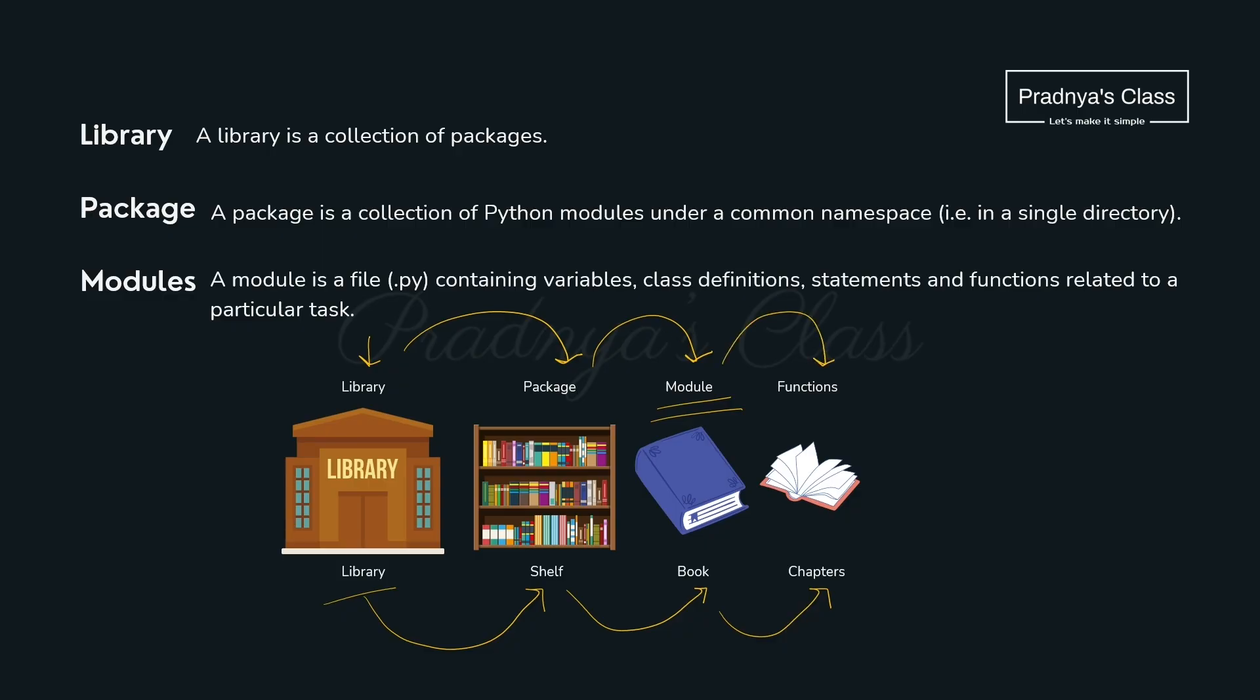Then if we talk about the definition, library is nothing but a collection of packages. And what's the package? It is nothing but a collection of modules. And in module what you will have? Generally you will have functions. Along with that you may have some variables and other details too. With the hope that it is clear to you now what is library, package, module and functions.